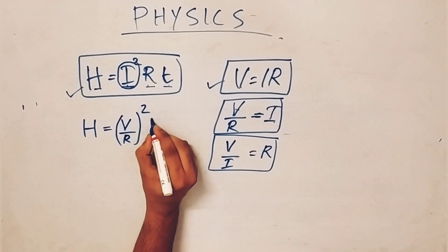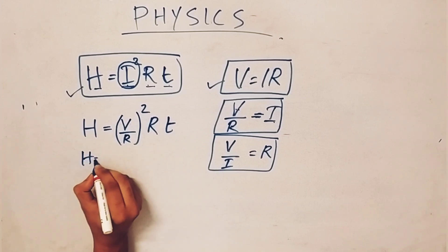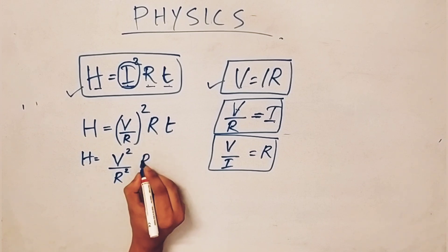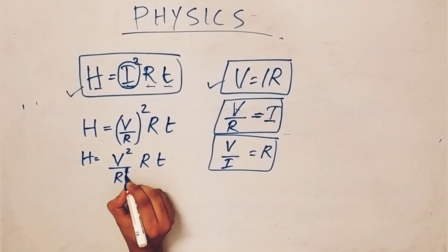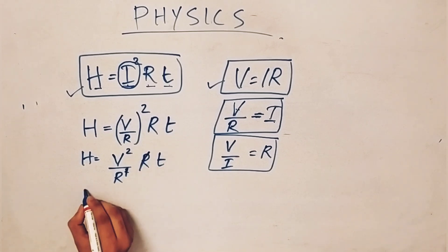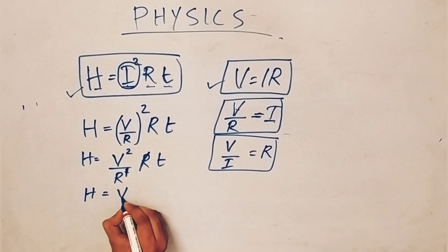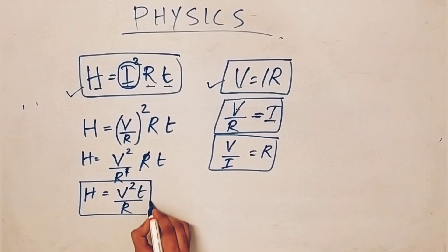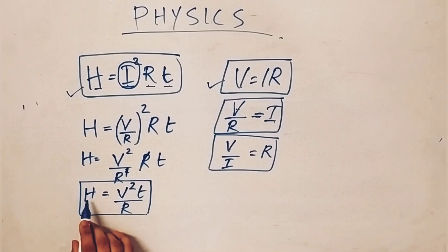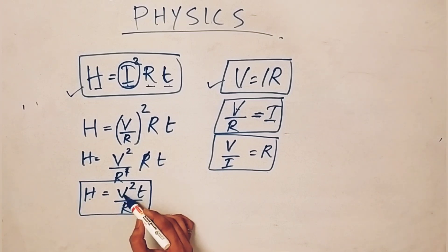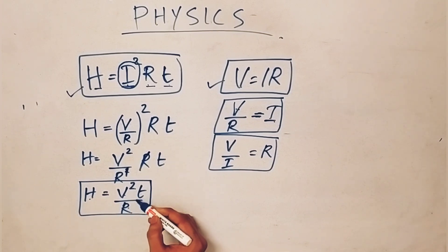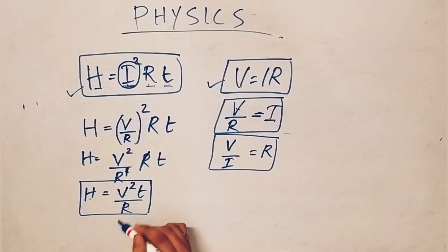H equals I squared into R into T. Now the square is V squared by R squared into R. So this becomes H equal to V squared by R into T. You can use the heat with voltage, time, and resistance. There is no current — you can use voltage, resistance, and time.